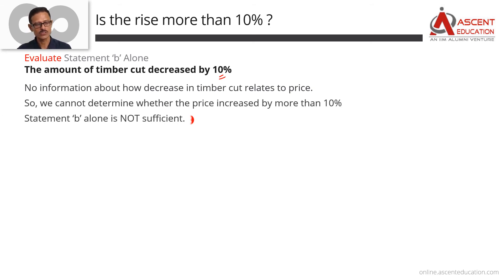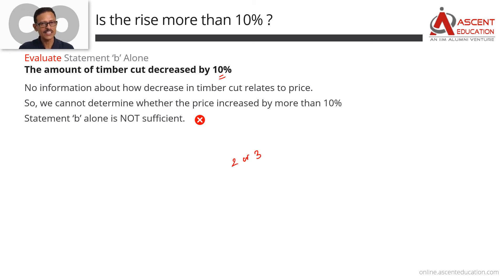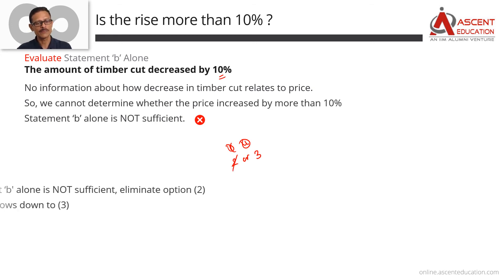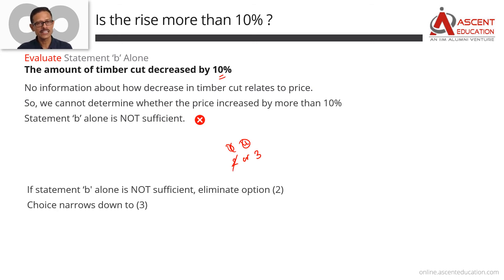So Statement B alone is also not sufficient. Since A alone was not sufficient, we had already narrowed down to options 2 or 3. Now since B alone is also not sufficient, we eliminate option 2. All that is left is answer option 3.